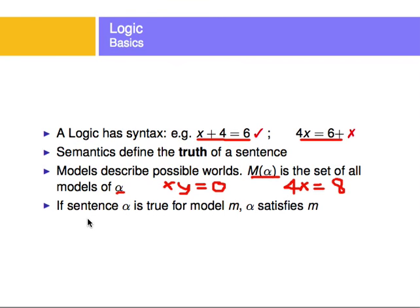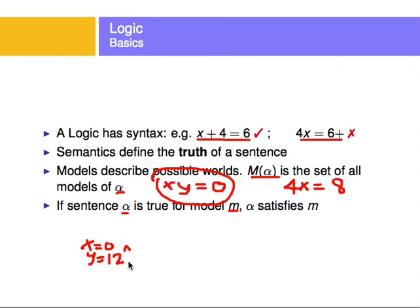If a sentence alpha is true for model M, we say alpha satisfies M. For example, if the sentence is x=0 and y=12, and that sentence is true for a given model, then alpha satisfies this model. We can say x=0 and y=12 satisfies this model, while x=1 and y=12 does not satisfy the model.